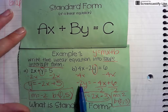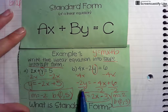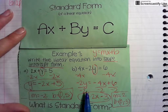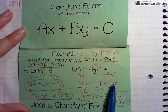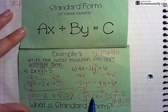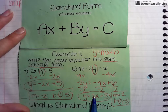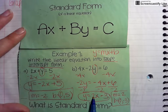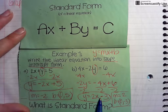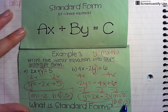To get y by itself, you want to divide both sides by negative 2. Because these are different terms, you want to divide each by negative 2. So you have negative 4x divided by negative 2, and 6 divided by negative 2, giving a positive 2x minus 3. So my slope is going to be 2 — my m value. My b value, or y-intercept, is going to be (0, negative 3).